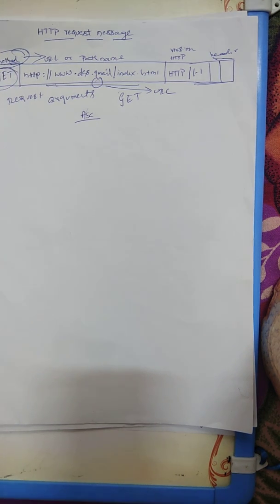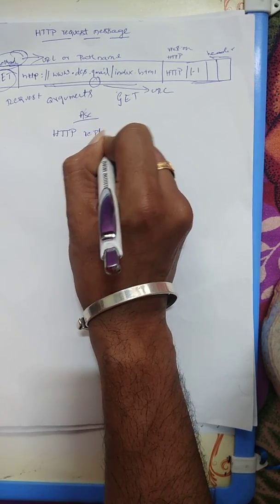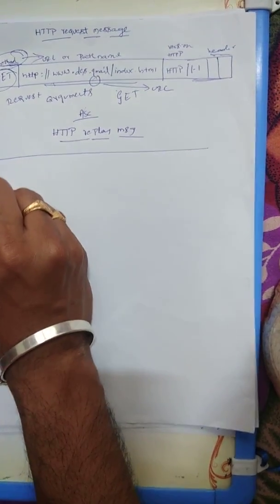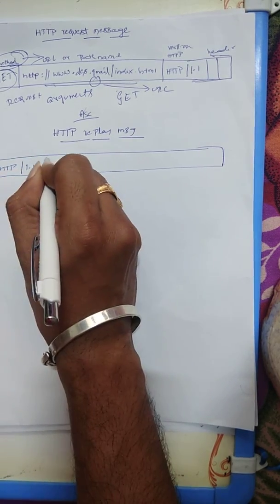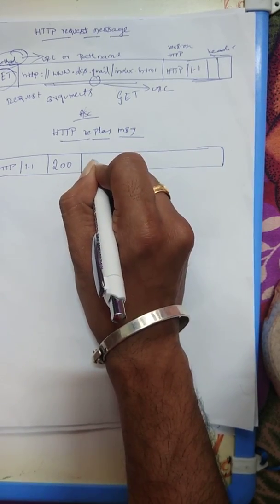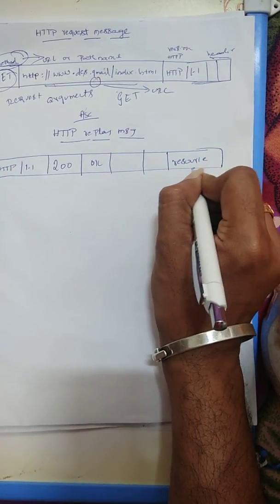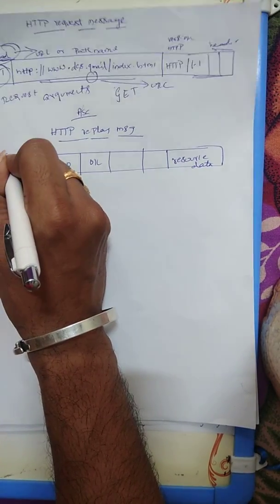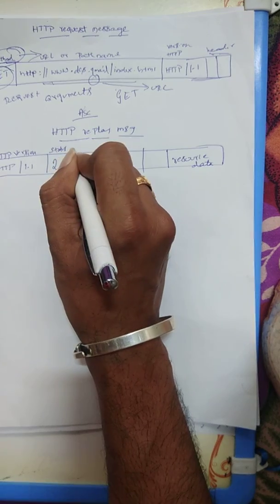This is called an HTTP request message. Now we will move on to another concept called the HTTP reply message. Similarly, you have to draw the reply message. The version here is HTTP 1.1 200 — I will explain what that means — and this is the status code, and finally resource data.